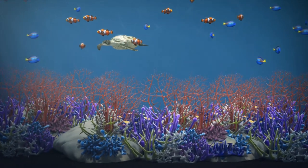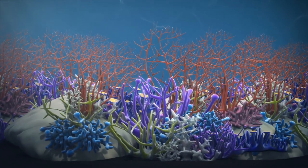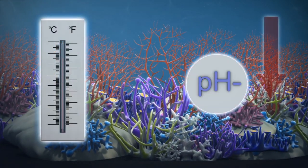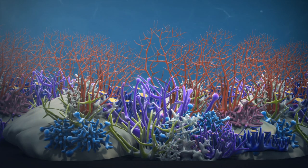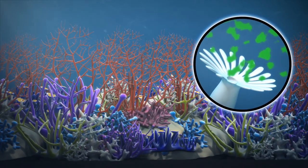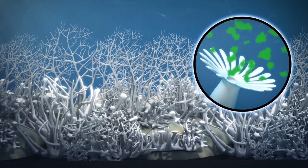Warming and rising acidity bleach coral reefs by making corals eject their symbiotic algae. A new study presented to the American Geophysicists Union says that these processes will kill off nearly all coral reef habitats by 2100.